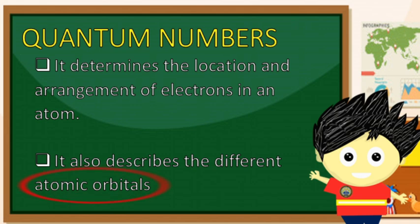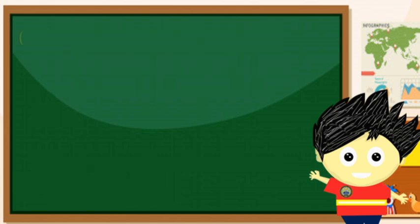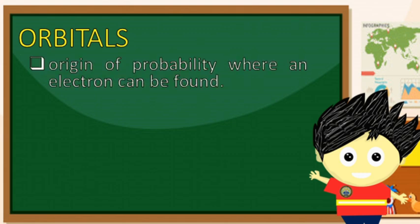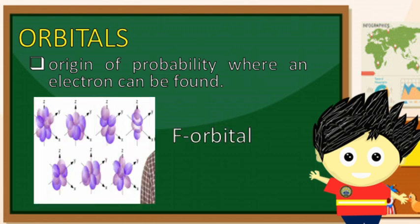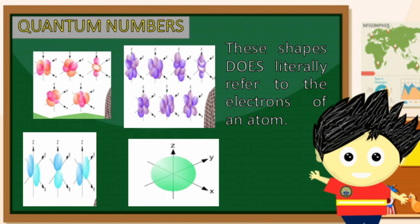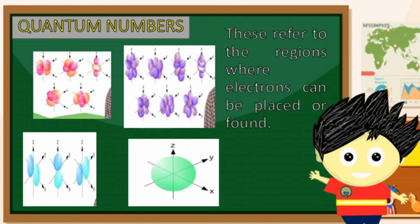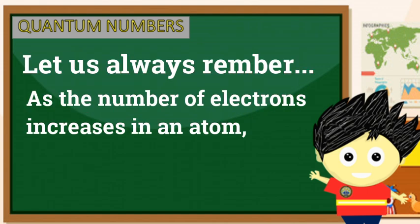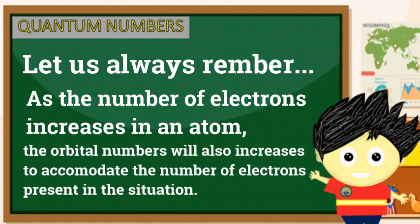Ngunit nabanggit natin ang tinatawag na orbitals. Kung babalikan natin ang description nito, orbitals is the region of probability where an electron can be found. Sa ating previous lecture tungkol sa pagsulat ng electron configuration, nabanggit natin na mayroon tayong apat na uri ng orbitals: ang s-orbital, p-orbital, d-orbital, at f-orbitals na may iba't-ibang hugis. Tandaan natin na ang mga shapes na ito ay hindi tumutukoy sa electrons — ito ay tumutukoy lamang sa mga regions kung saan pwede mailagay at matagpuan ang mga electrons. Ang bawat isa ay may kakayahan na humawak ng isang pares o dalawang electrons. Tandaan natin na habang dumadami ang numbers ng electrons ng isang atom, dadami ang orbitals na mag-a-accommodate dito.